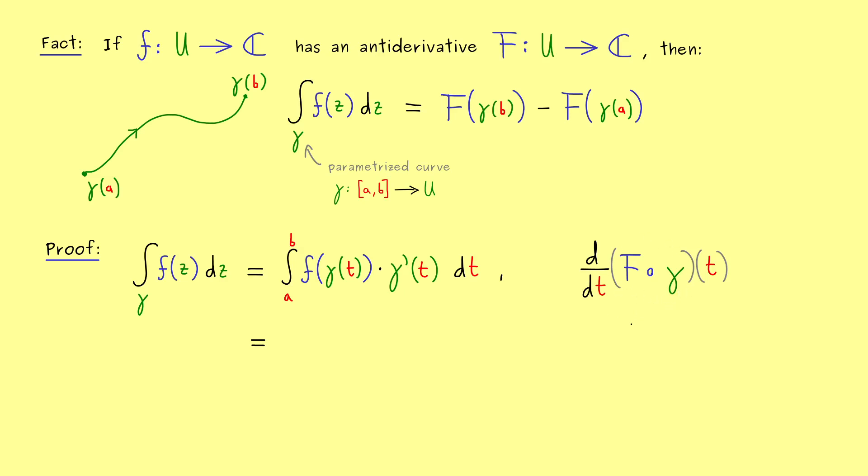And of course this even holds for complex derivatives. More precisely it means we have capital F prime of gamma of t times the inner derivative gamma prime of t. So not hard to see this is the result when we apply the chain rule.